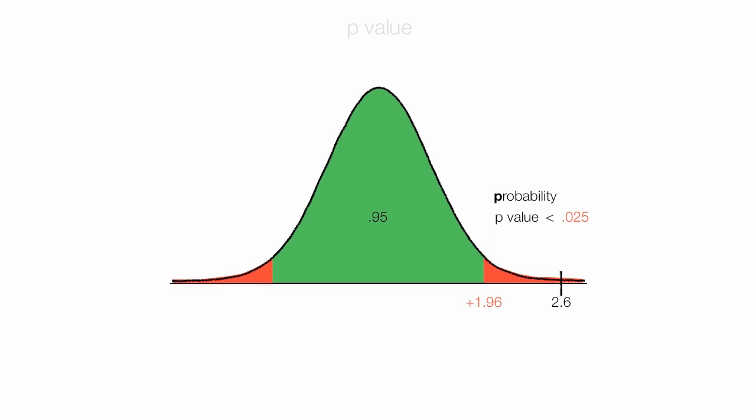I can calculate the exact p-value or look that up in a table. The exact p-value is the area above 2.6. The area, the exact p-value, is equal to 0.0047. That is the exact area.